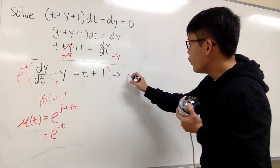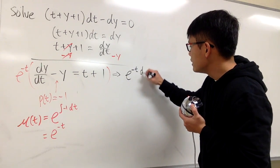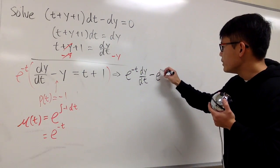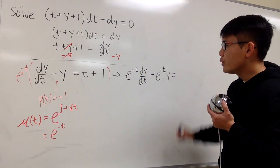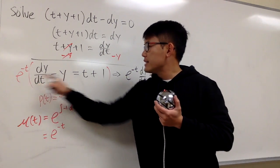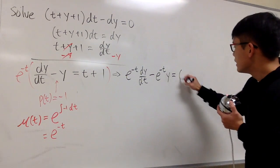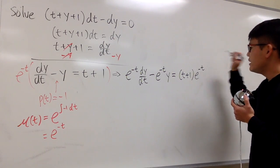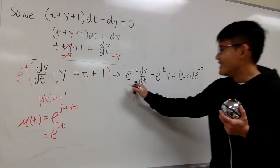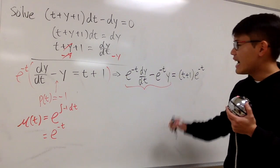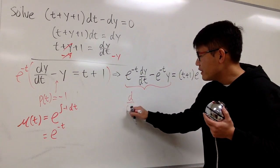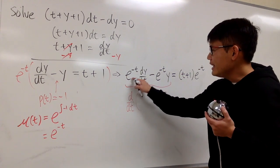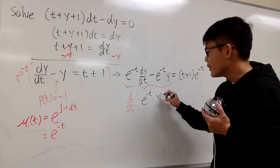On the left-hand side, we will have e^(−t) dy/dt, and then negative e^(−t) times y. This is equal to (t plus 1) times e^(−t) on the right-hand side. The left-hand side is nothing but the derivative of e^(−t) times y.